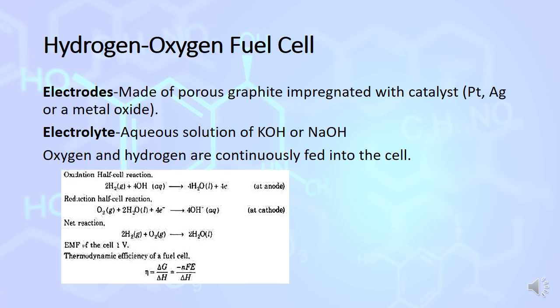In this, oxygen and hydrogen are continuously fed into the cell. At anode, hydrogen combines with electrolyte OH- ion to convert into water and release electrons. These electrons reach the cathode where oxygen combines with electrons: O2 plus 2H2O plus 4 electrons gives 4OH-. Overall reaction is H2 plus O2 gives 2H2O.